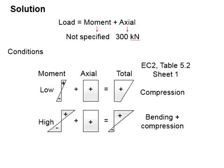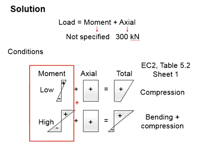Based on the question, the load consists of moment and axial compression. The axial load is specified to be 300 kN, but the moment is not specified. In this case, there will be two possible outcomes of the load condition.